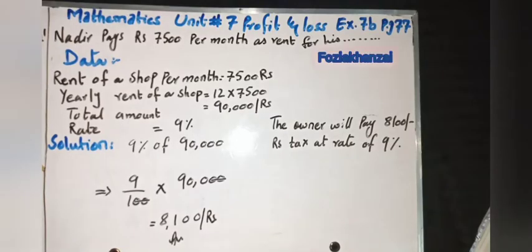Good morning students, it's your math class, Class 7. Today we will start Exercise 7B. Before we start, please complete examples page number 76. Now, question number one: Nadir pays 7,500 rupees per month as rent for his shop. What amount of tax will the owner have to pay at the rate of 9%?